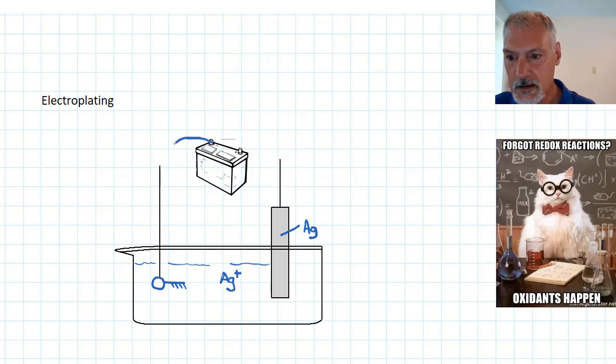The key, I always hook that up to the negative terminal of the battery because the key needs to gain electrons. Electrons need to come down here and my silver needs to come over on the surface of the key, collect electrons, and turn into solid silver.